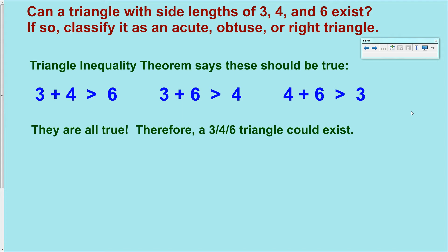That means a 3-4-6 triangle could exist, and now all I have to do is classify it according to one of our theorems today, whether it's right triangle, acute, or obtuse. So, the next step, then, is to identify the longest side, 6, and then substitute it in for C in the a² + b² = c² equation.